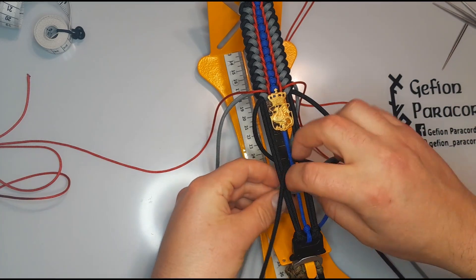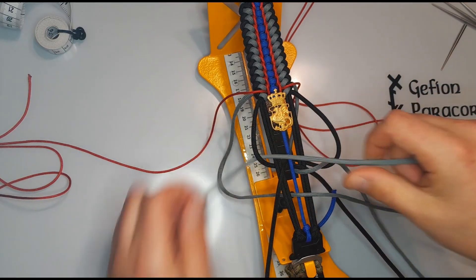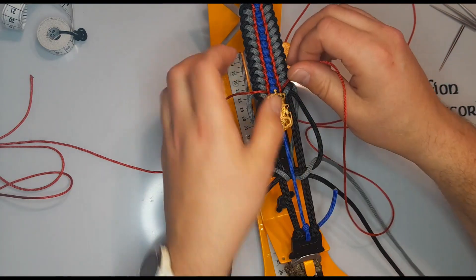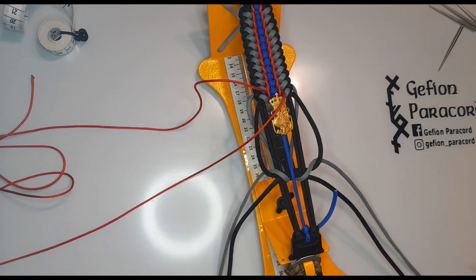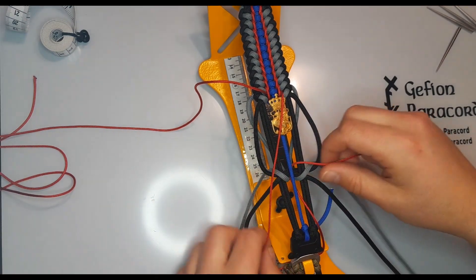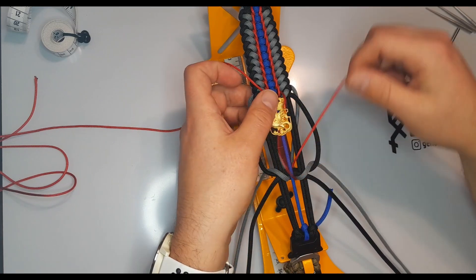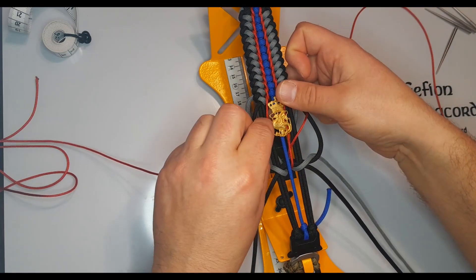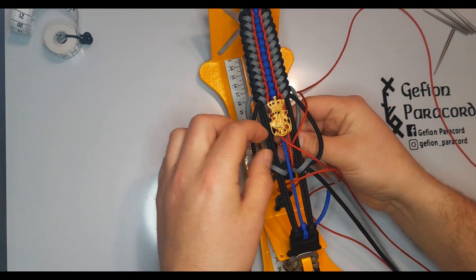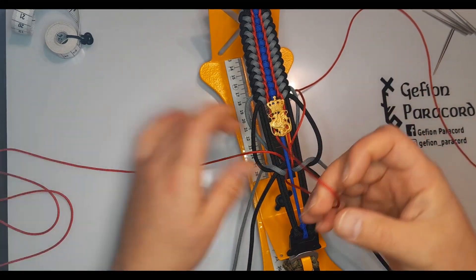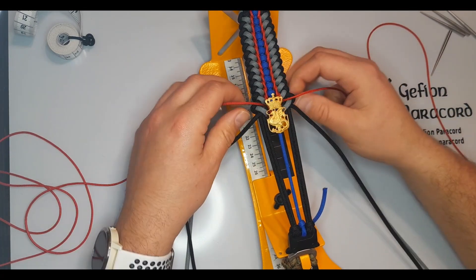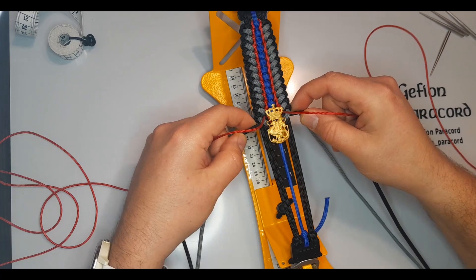This is where it gets a bit more tricky. We'll repeat the process from before. Then we take our center strand in just a minute. Just need to complete this one pass. And tighten. Obviously the emblem is on the back, that makes it a bit harder. But it is doable.